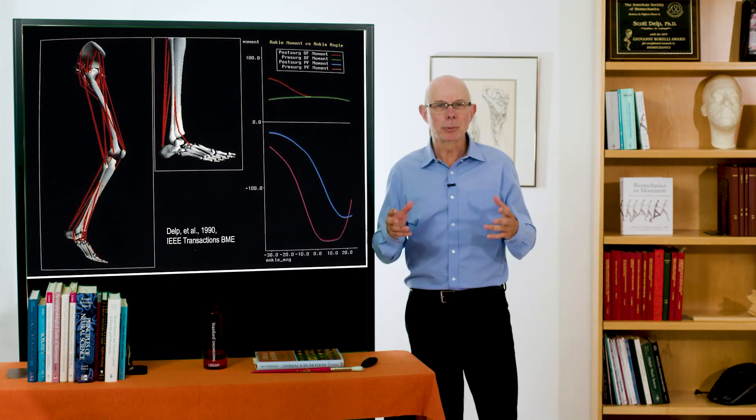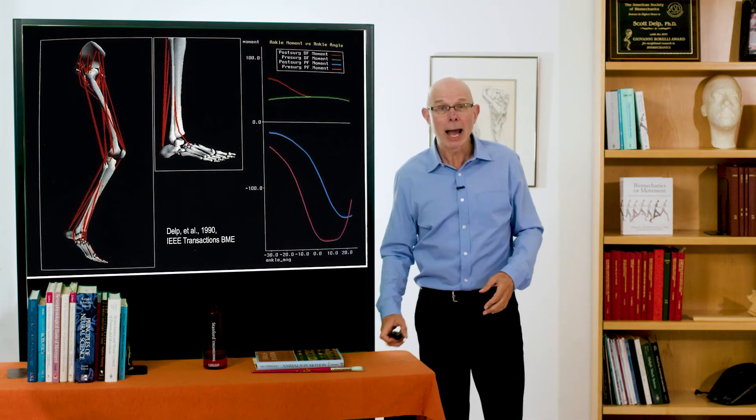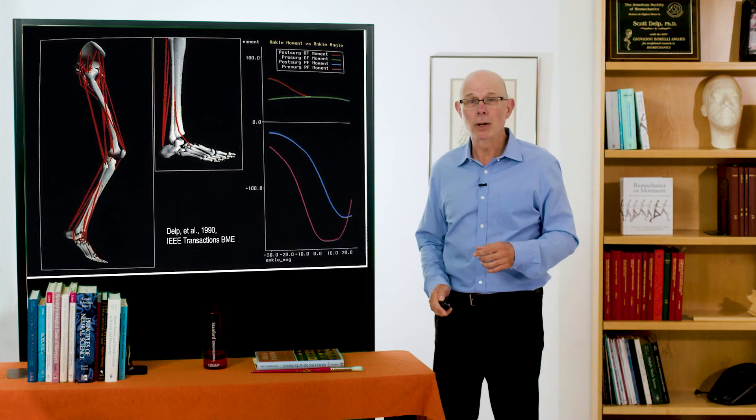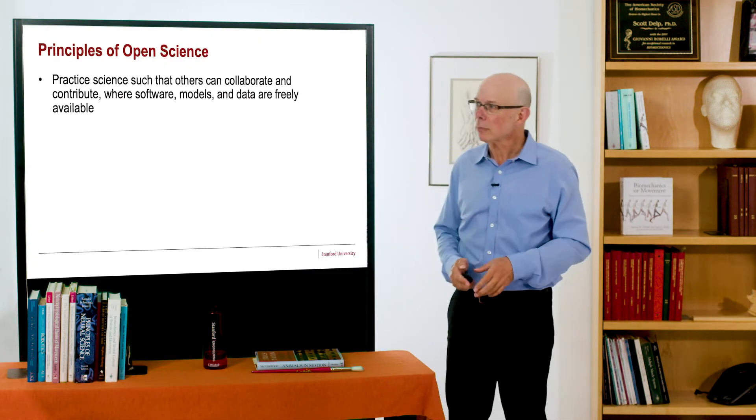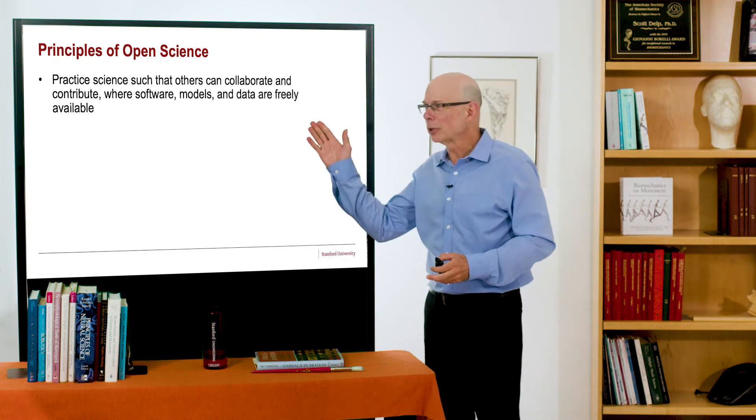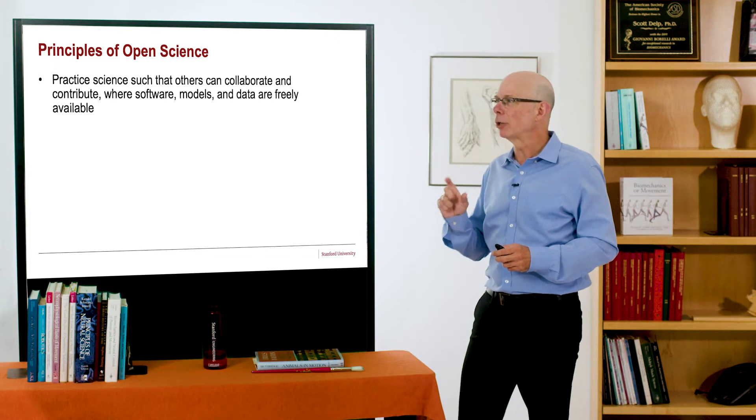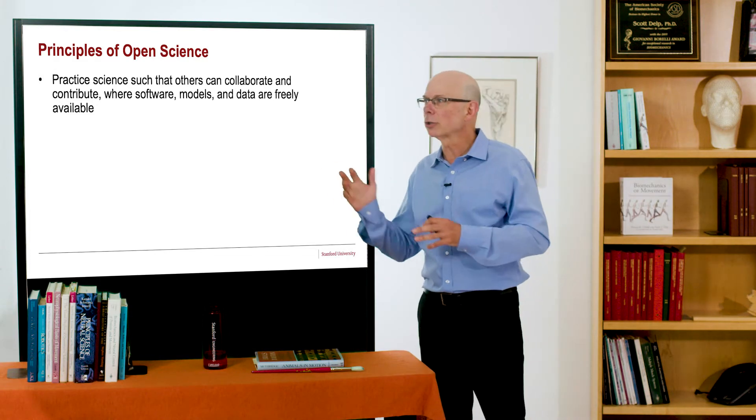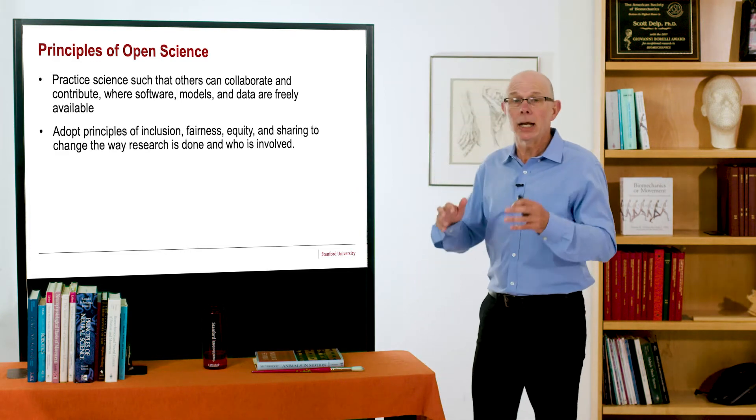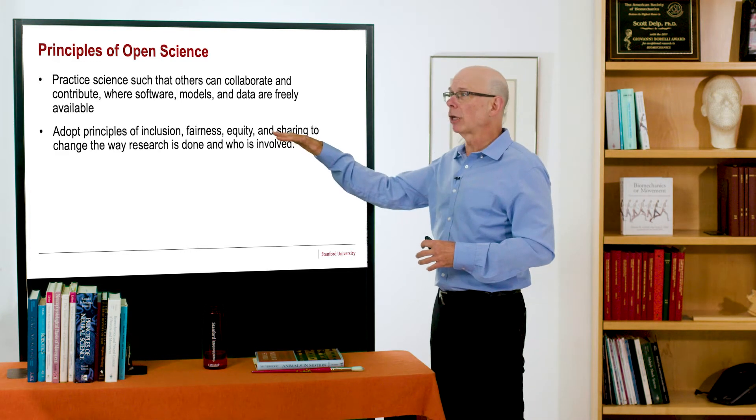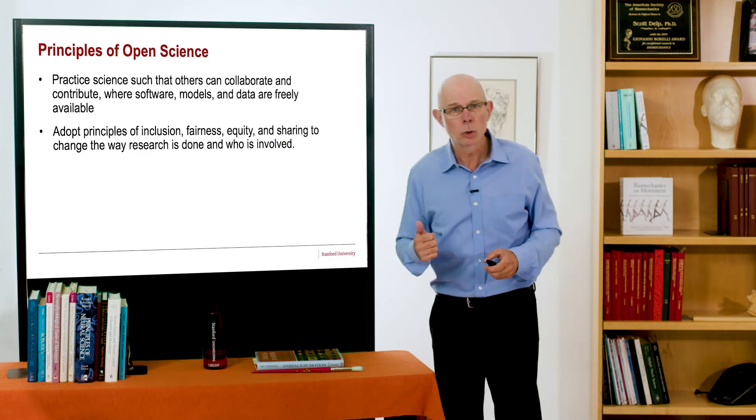This was made possible by what is now called open science, which I didn't know what it was in the past, but I wanted to describe what open science is now. There are some basic principles. First, the principles of open science. It's the practice of science such that others can collaborate, contribute, where software models and data are freely available to everyone. Second, it adopts the principles of inclusion, fairness, equity, and sharing to change the way research is done and who's involved.